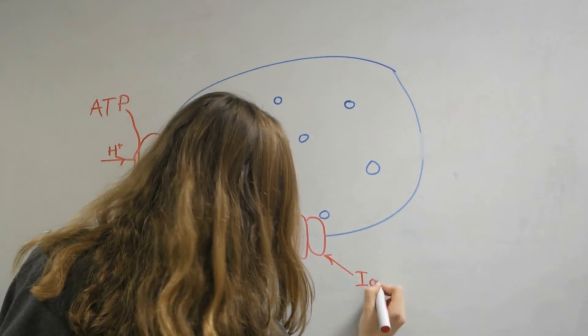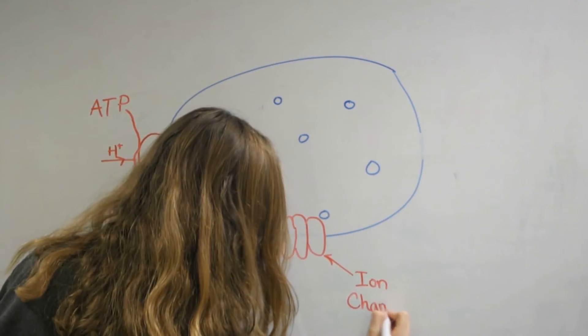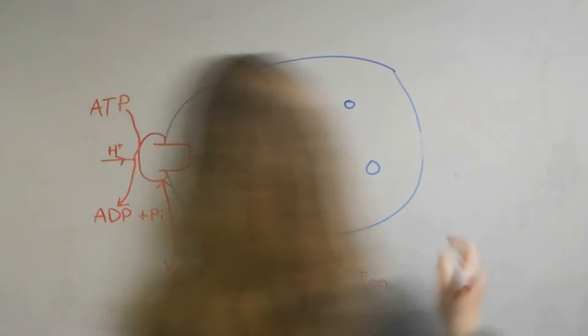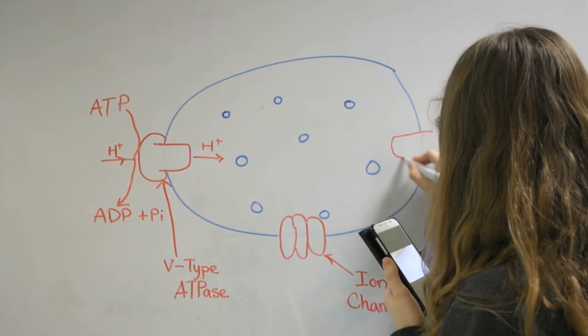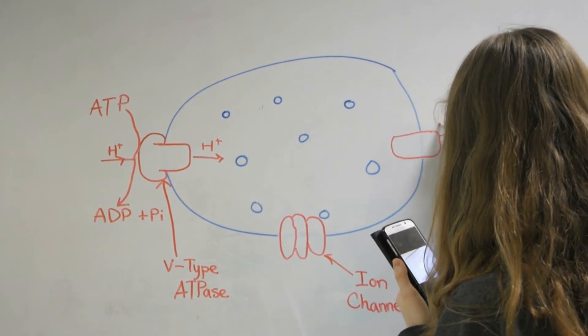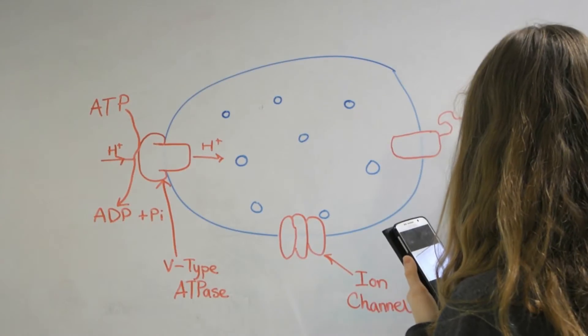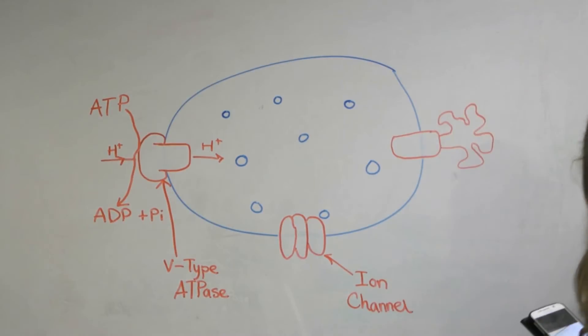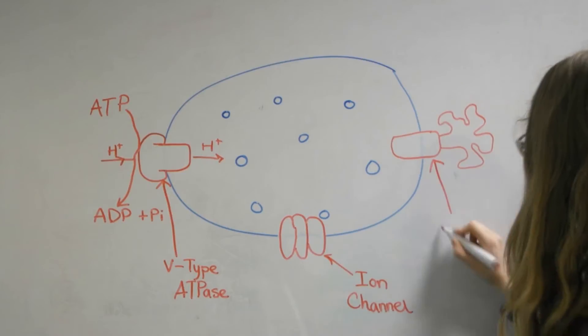There are also other very important components of the membrane including ion transporters and channels as well as specific transporters for the products created by macromolecule digestion. Transmembrane proteins comprise a large majority of the membrane protein.